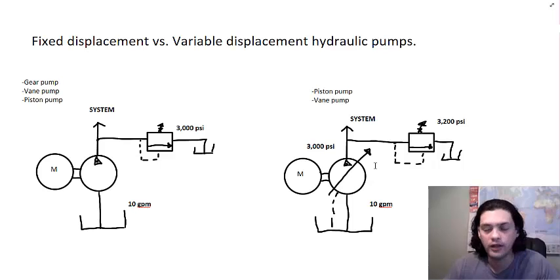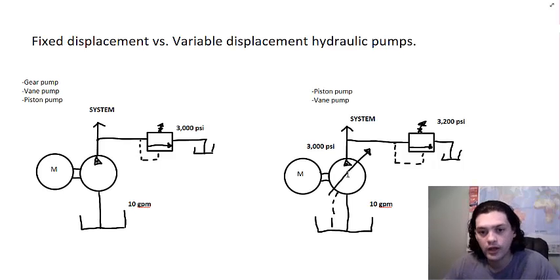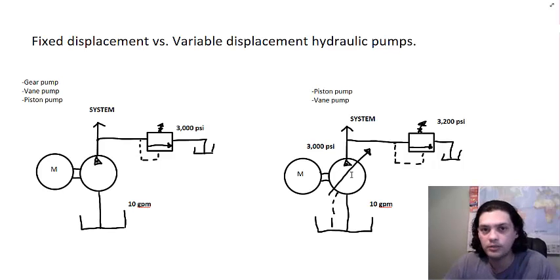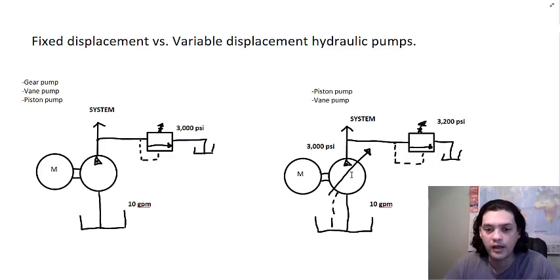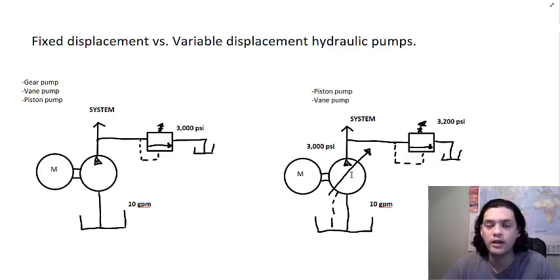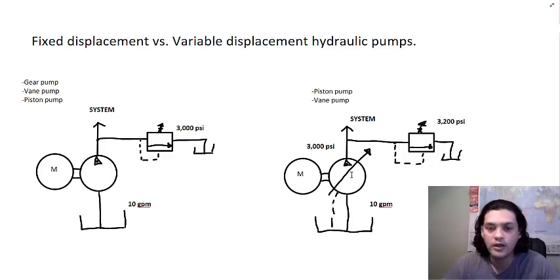In a case like that, you set up a variable displacement pump. Through the pressure compensator on the pump, you set the maximum pressure — say 3,000 PSI. The pump keeps pumping oil when pressure is below 3,000 PSI, and once it reaches that setting, it destrokes the pump to zero displacement and stops pumping oil into the system. But it maintains the pressure — you read 3,000 PSI in the pressure line without pumping more oil — saving horsepower, preventing overheating, and not wasting energy.